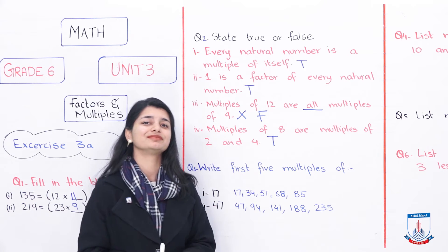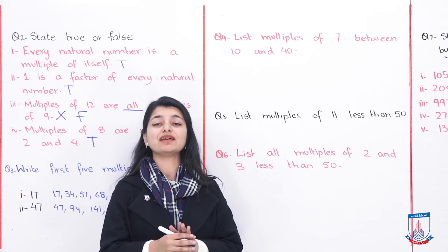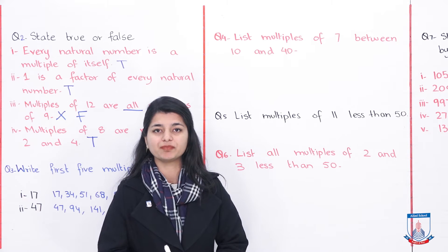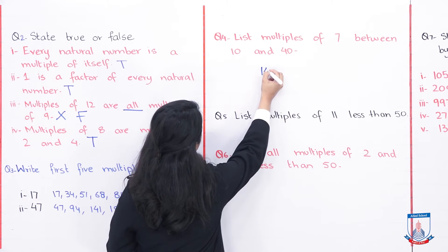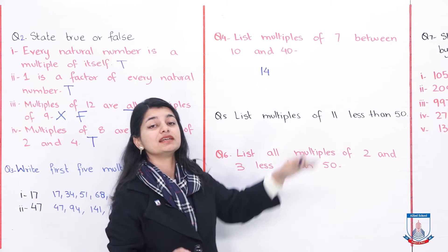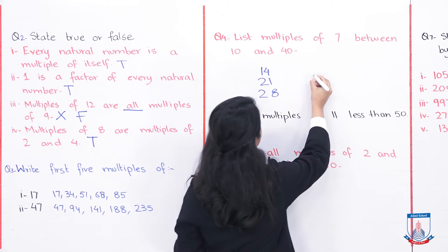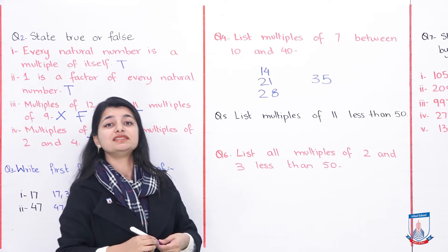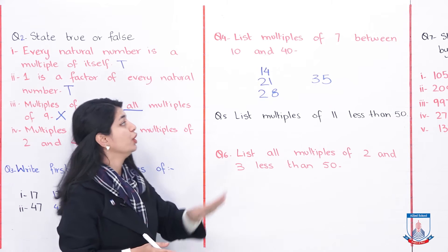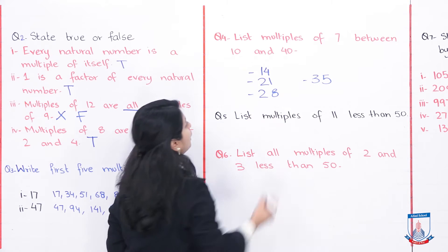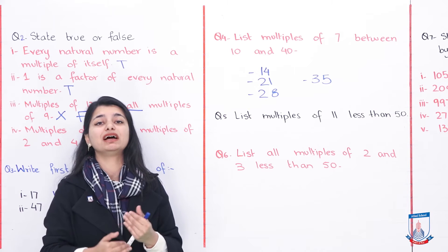Question 4: list multiples of 7 between 10 and 40. The multiples of 7 are: 7 ones are 7 — doesn't fall between 10 and 40, skip it. 7 twos are 14 — include it. 7 threes are 21 — include it. 7 fours are 28 — include it. 7 fives are 35 — include it. 7 sixes are 42 — that's above 40, stop. So only 14, 21, 28, and 35 count.